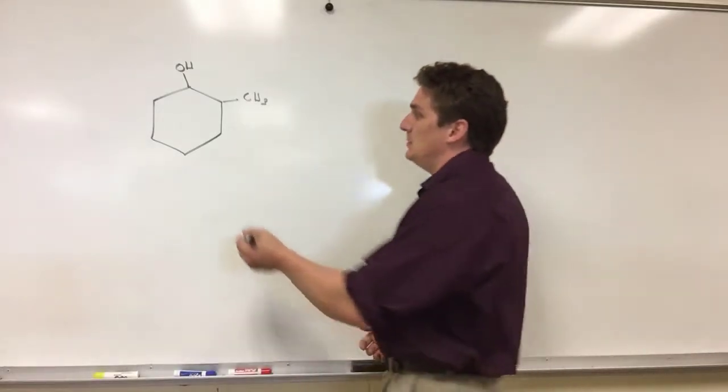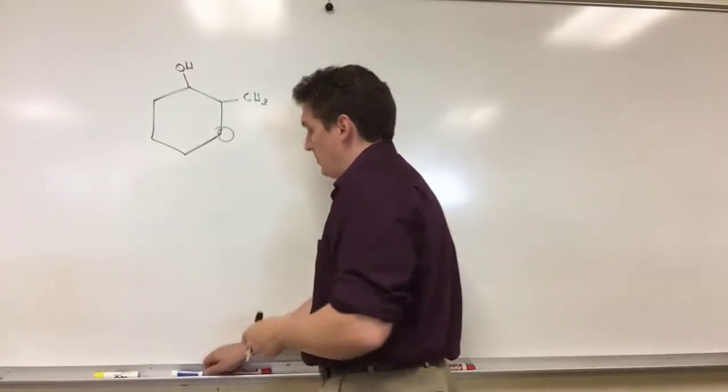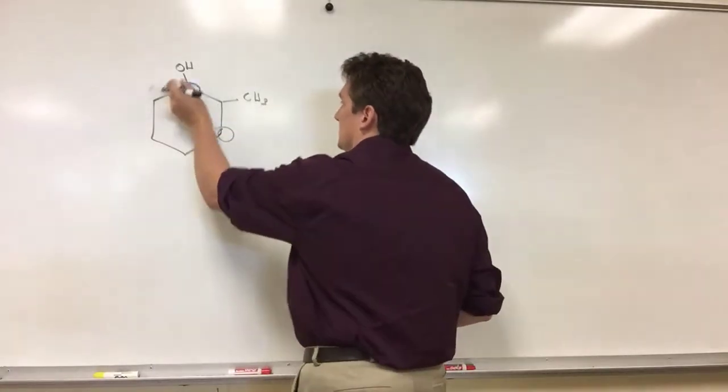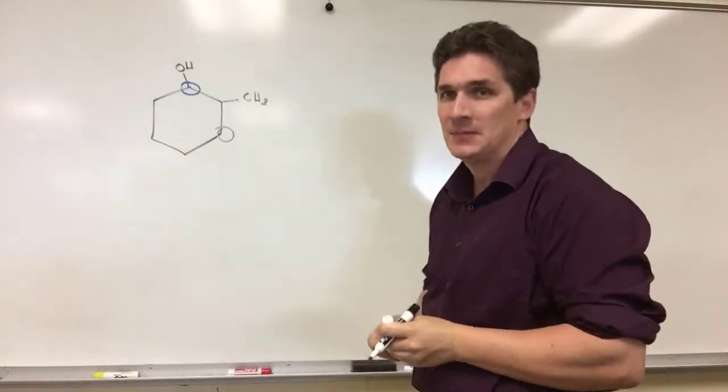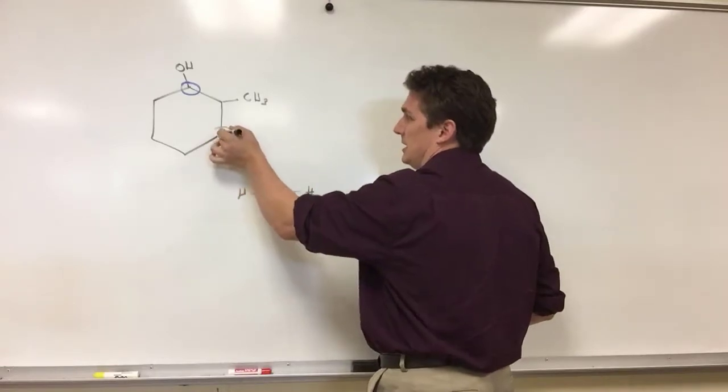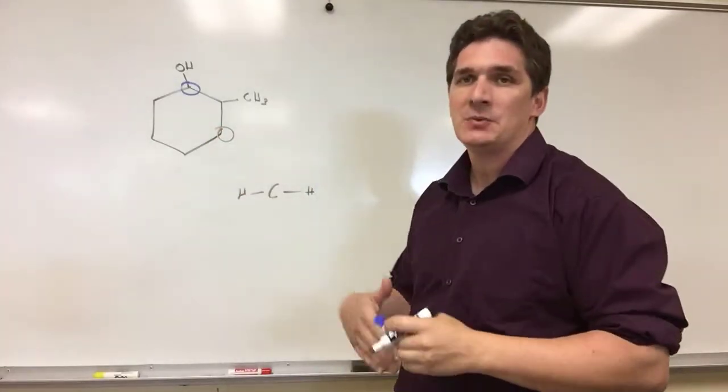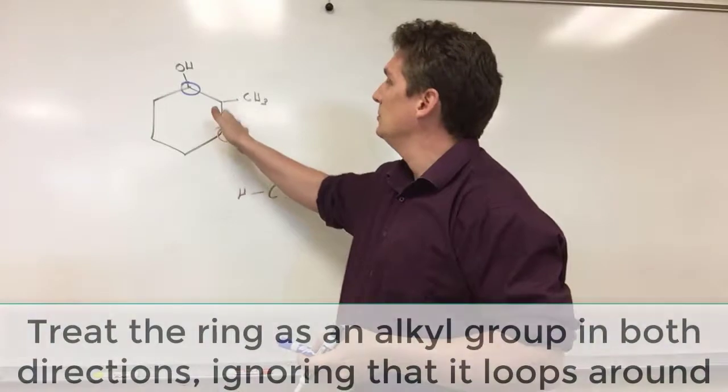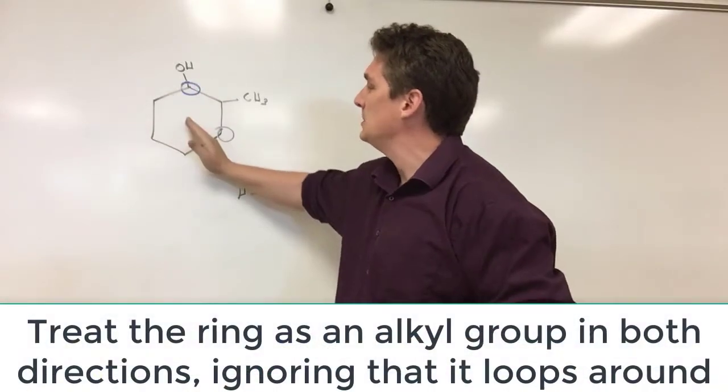So the trick with working with rings—let's say if you want to know if this carbon or this carbon is chiral—well, if you look at this carbon, we have carbon, we have a hydrogen on either side, and what we're going to do is look at the ring as if it were an alkyl group. If we're going to go this way, we look like it's an alkyl group.